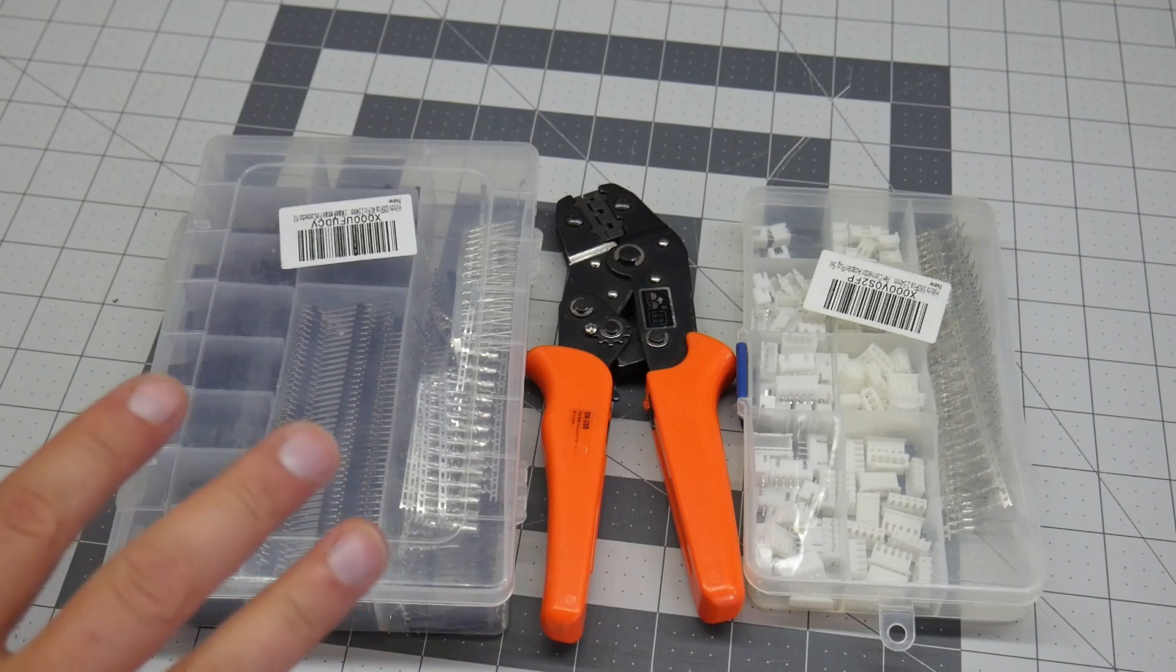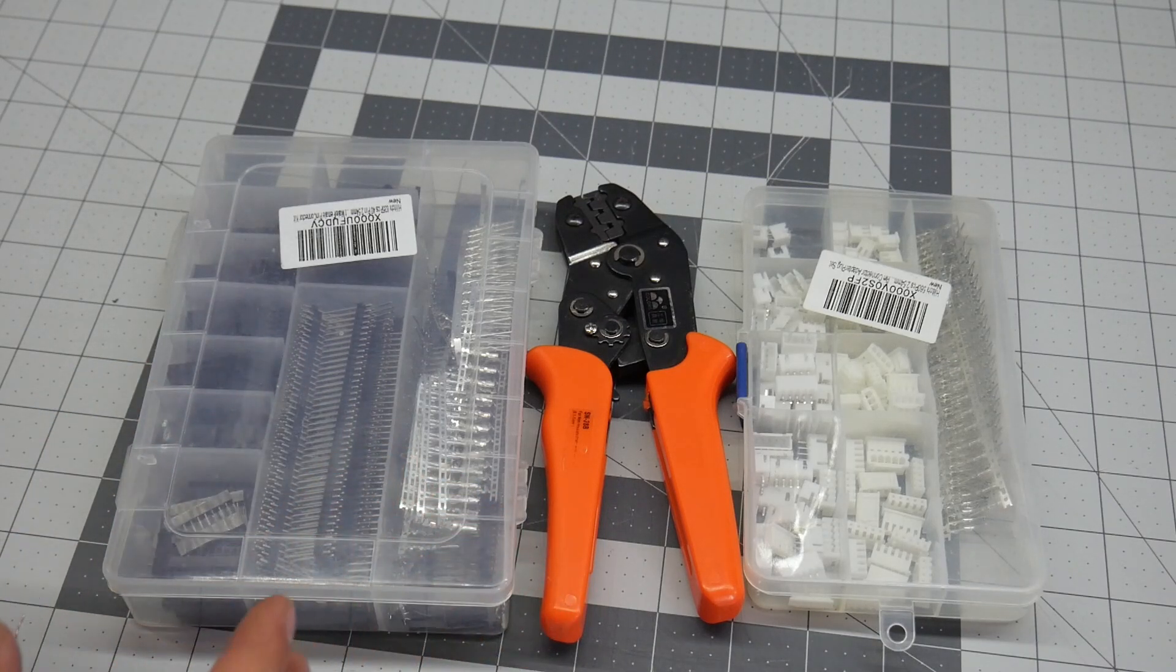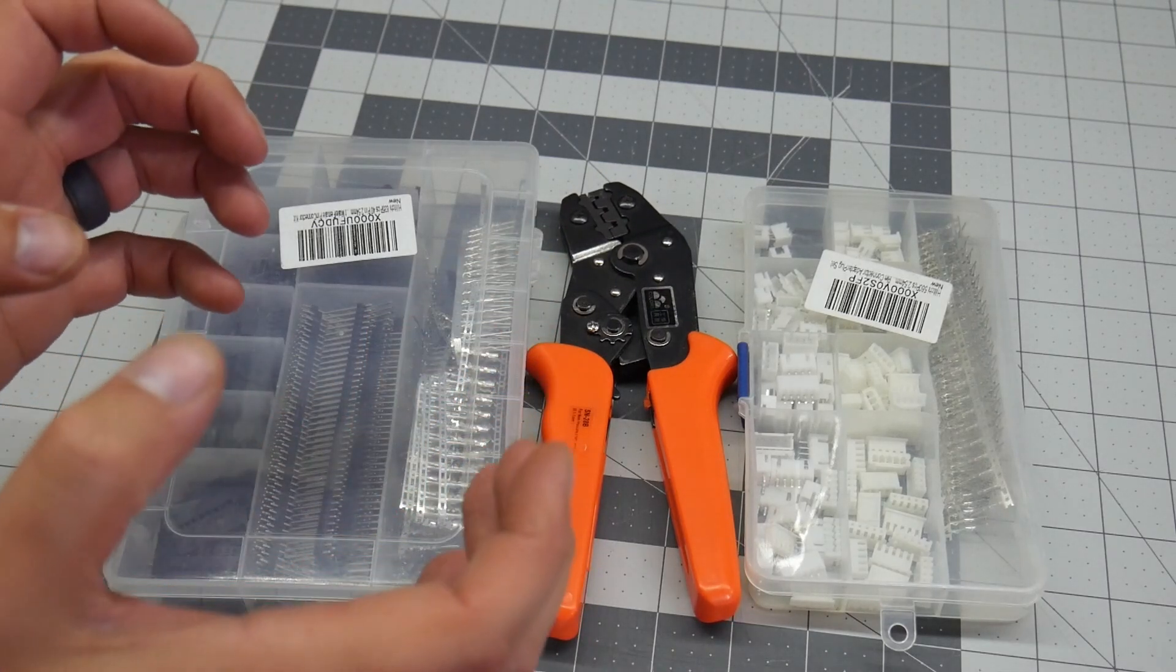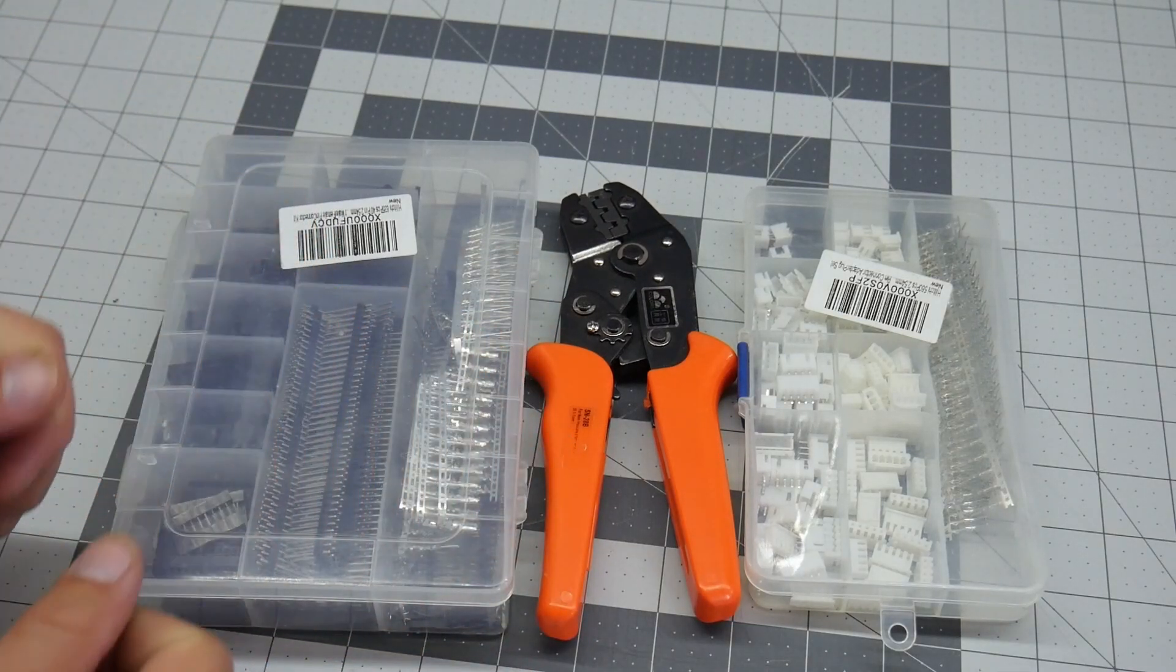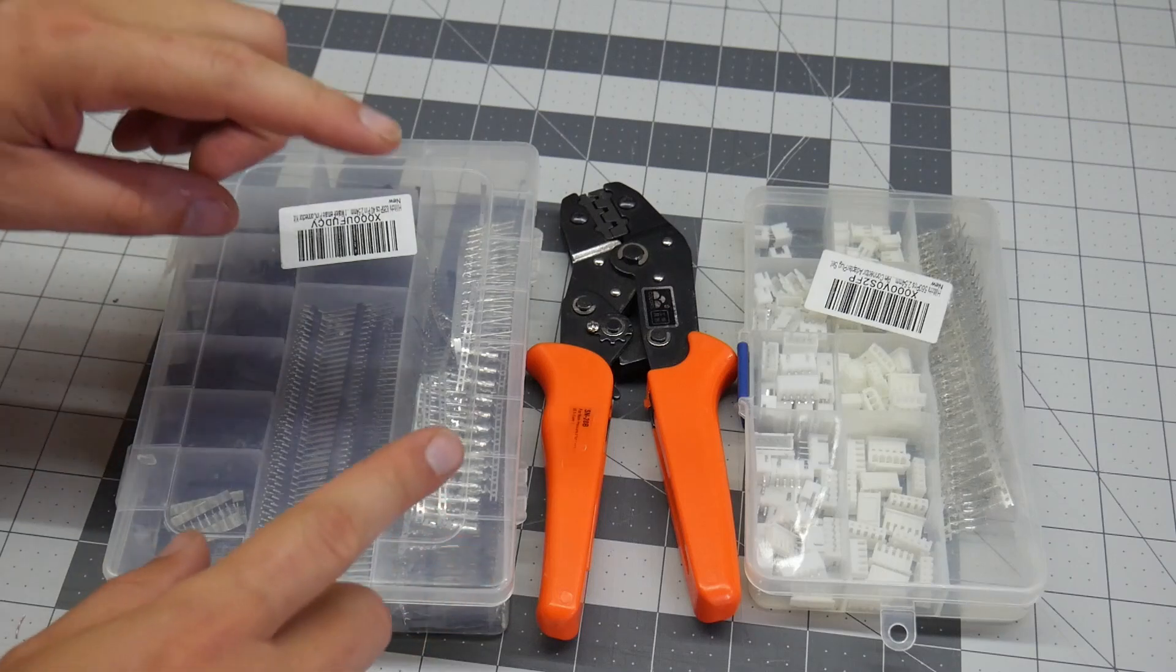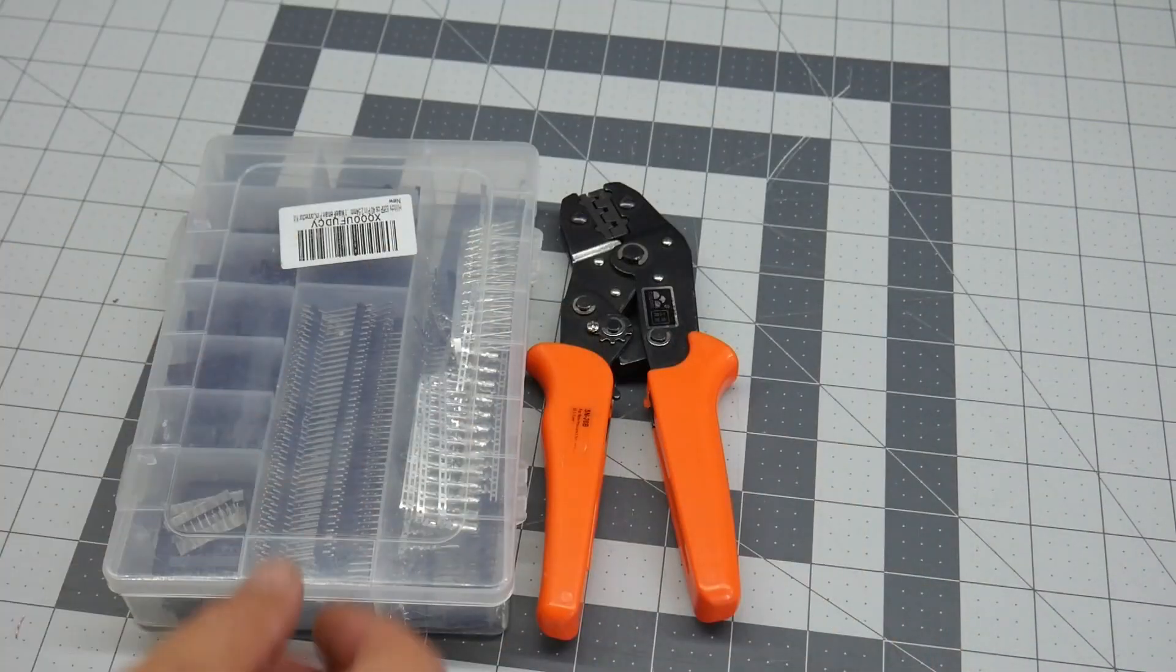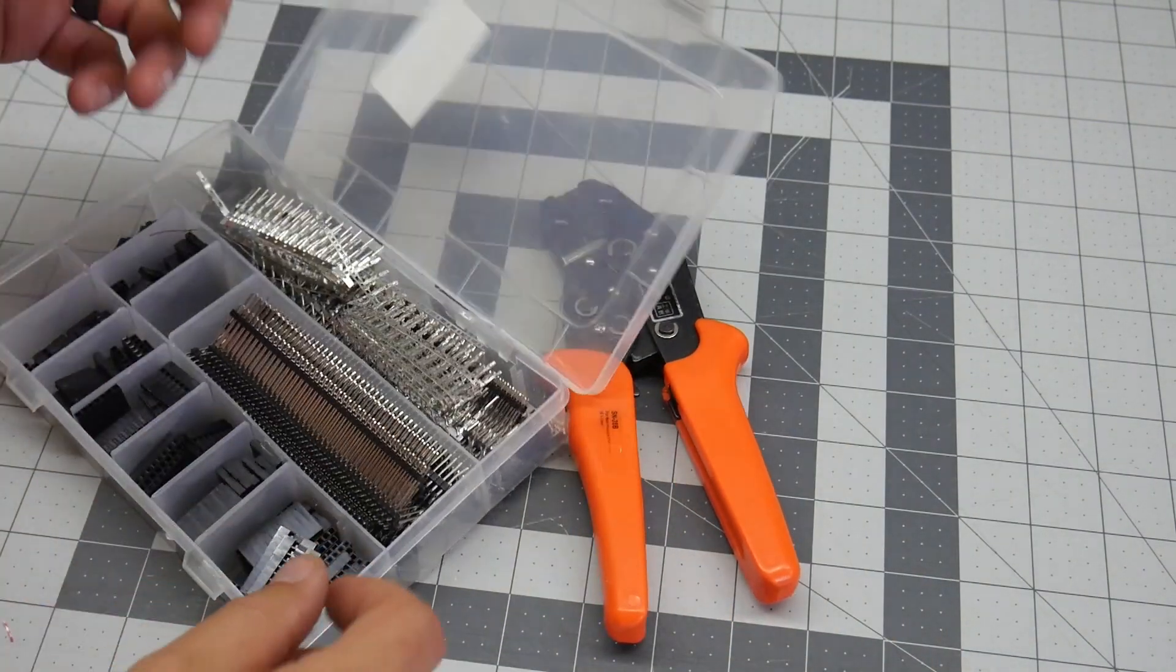The process for these is the same for both of them. They use the same crimper and the same type of crimp onto the wires. We're going to go with the DuPont because I have more of them sitting around. Again, this is exactly the same.